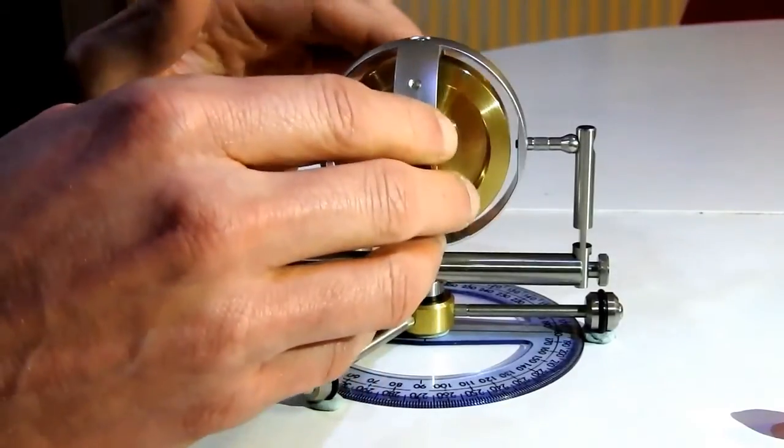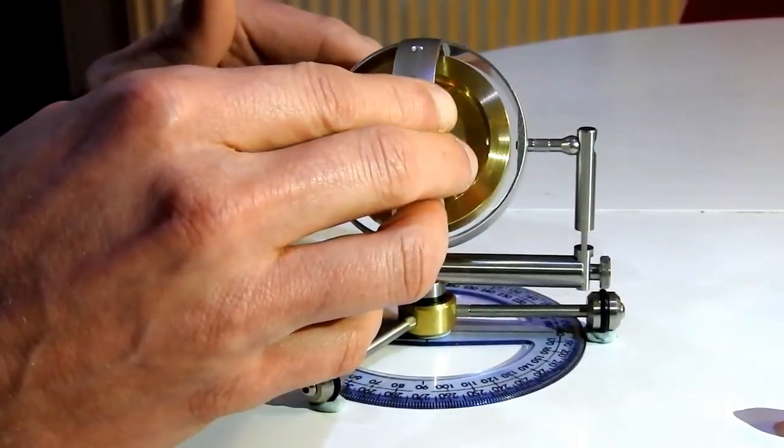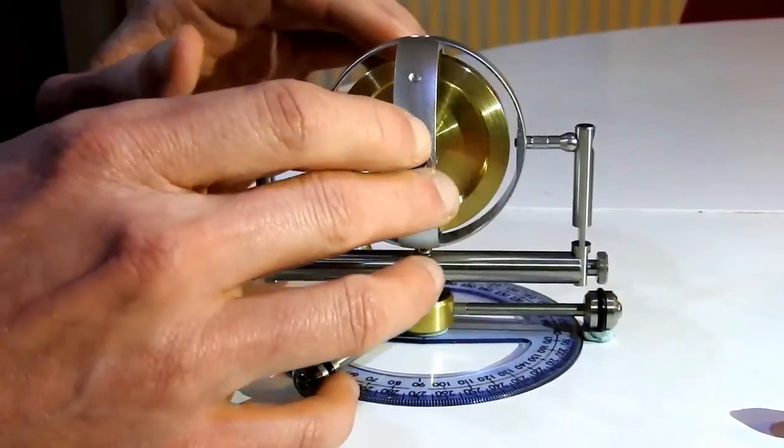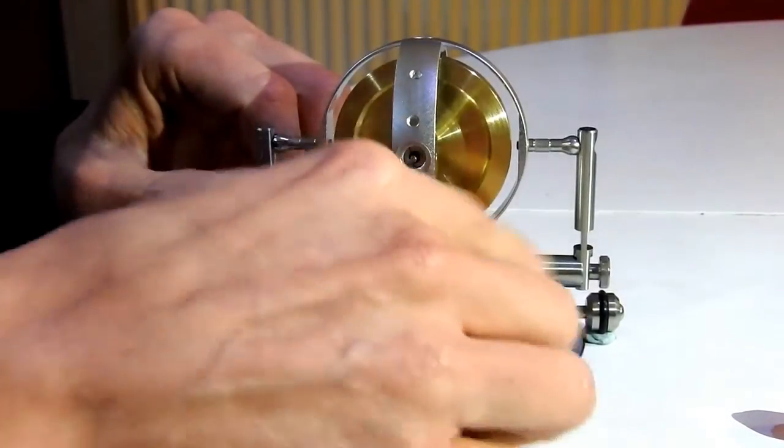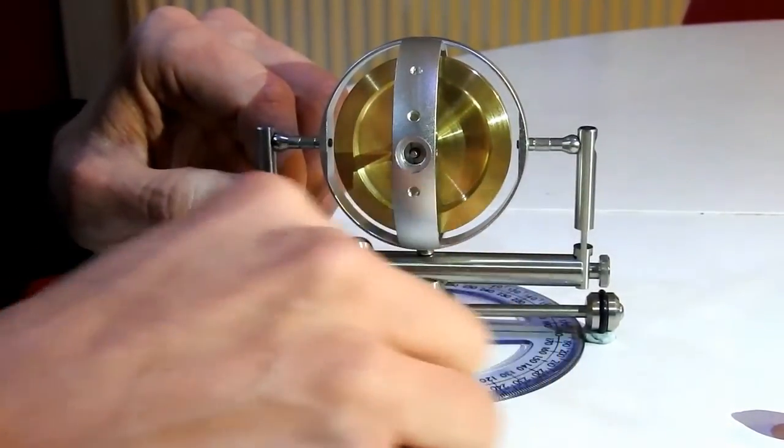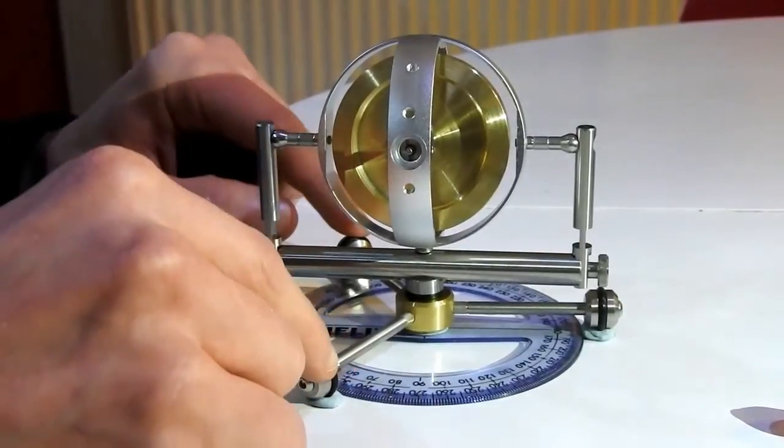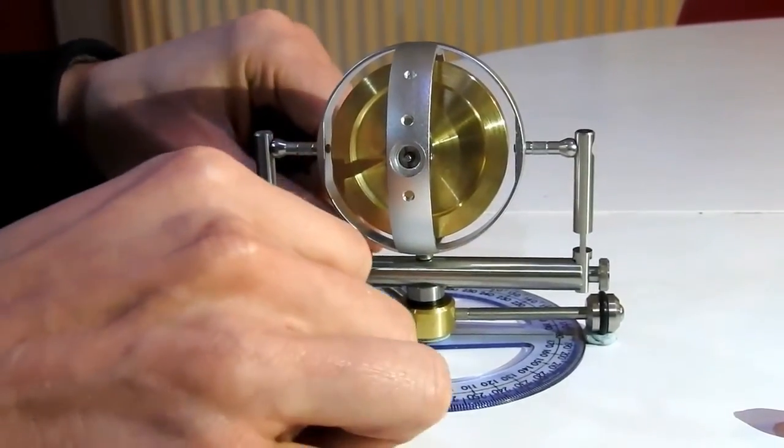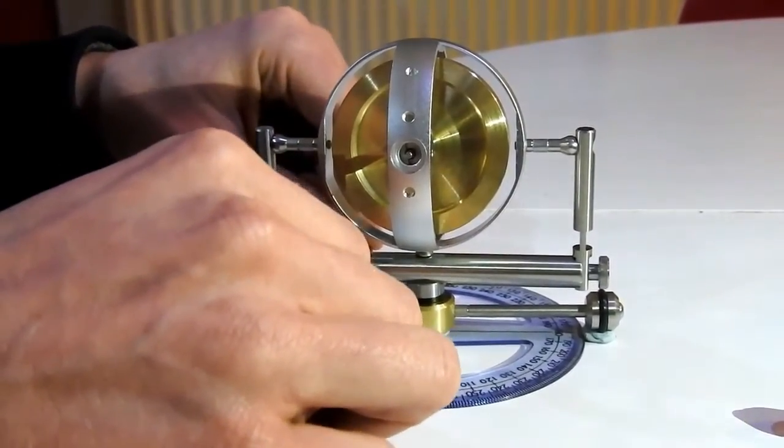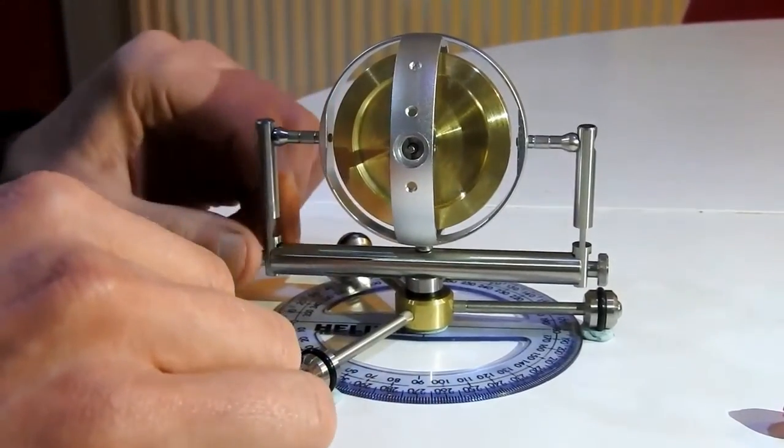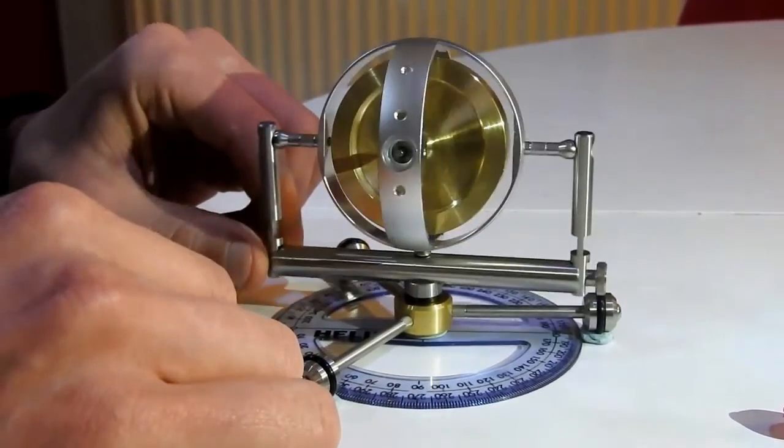If it was over here it would drop this way. So that's how I overcame that. I've attached the whole setup to a protractor which I've blu-tacked to the table, and I've blu-tacked the frame to the table as well.